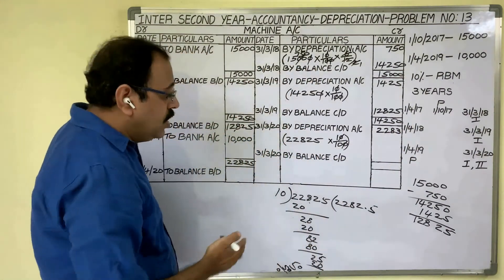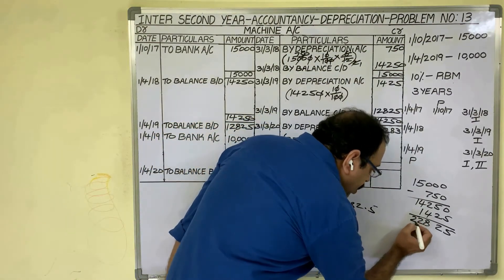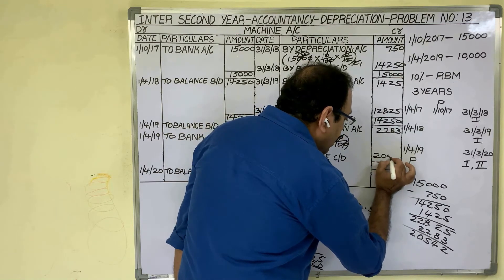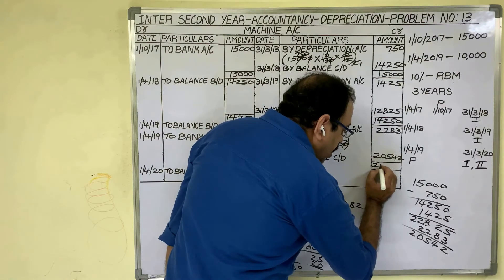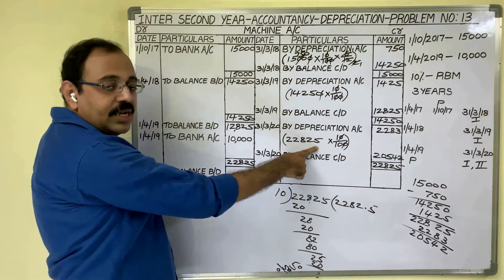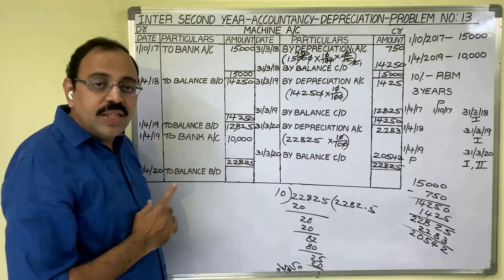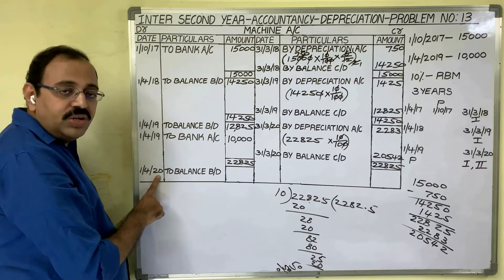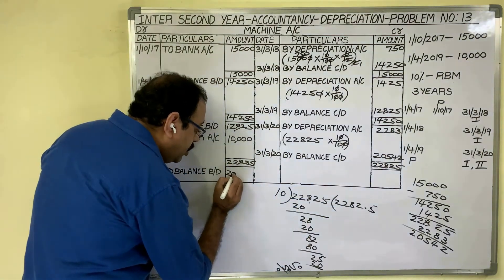With depreciation of 2,283, the balance carried down is: debit total 22,825 minus credit total 2,283 = 20,542. Write balance carried down of 20,542 on the credit side dated 31st March 2020; both sides total 22,825. The three years — 2017–18, 2018–19, and 2019–20 — are now complete. Since both assets continue into future years, bring the balance forward: balance brought down of 20,542 on 1st April 2020, representing the opening balance of both assets combined.